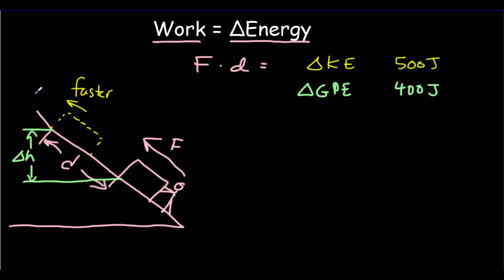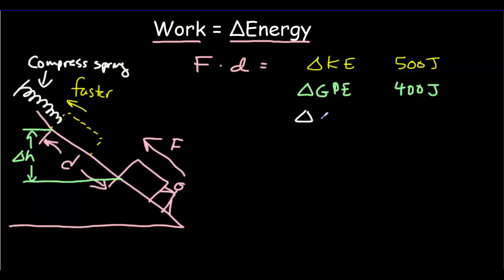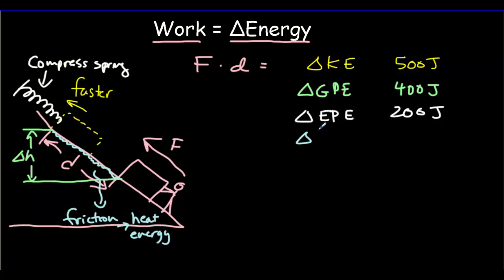We might also consider that there was some sort of spring attached, so that we were compressing a spring as we pushed up the box. Then there would be some energy stored in the spring — we call that elastic potential energy. Let's say the increase in elastic potential energy was 200 joules. And then, if there's any friction on the surface, we would produce some heat energy. Let's say that there was some added heat energy of 100 joules.